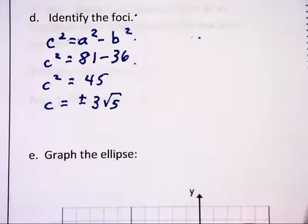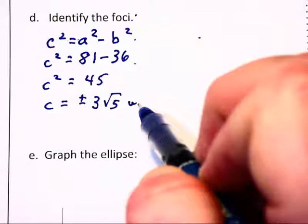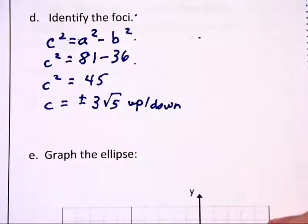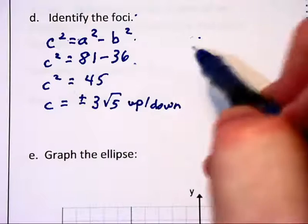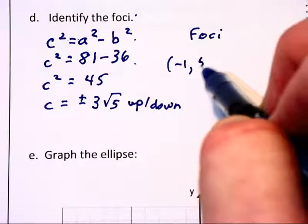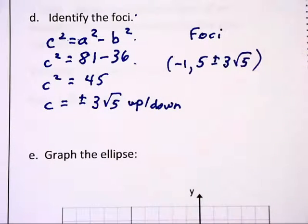Since this ellipse is elongated vertically more so than horizontally, we will be moving this 3 root 5 up and down from the center to get to the foci. And the foci will be located at (-1, 5 ± 3√5) to those y coordinates.